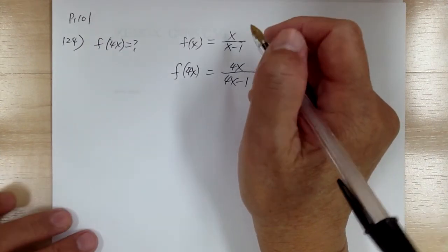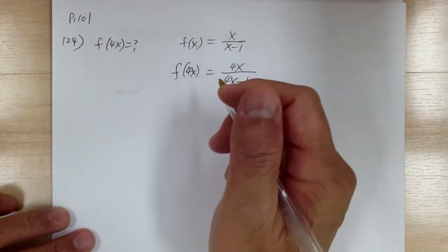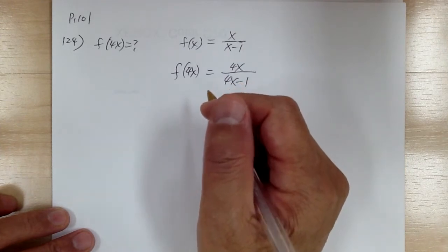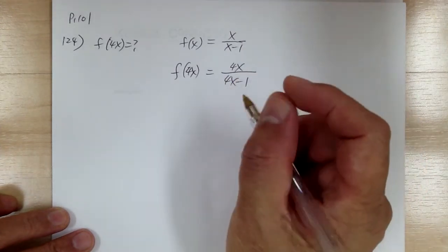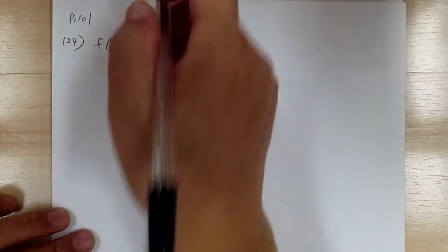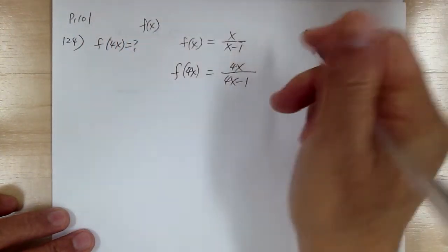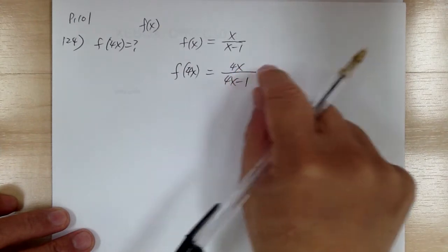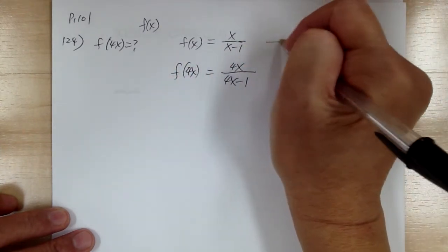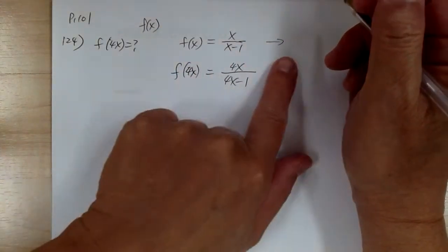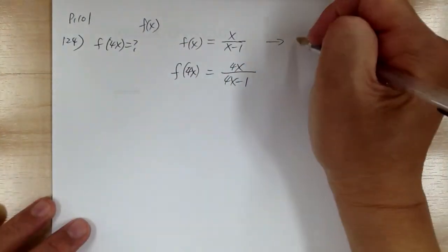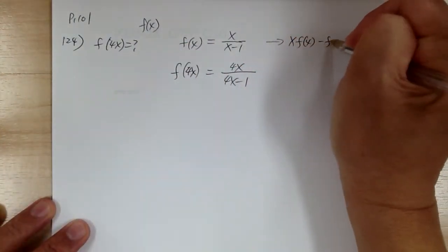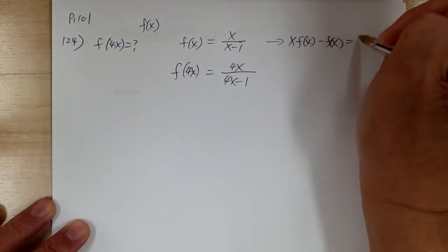Next, since we want this in terms of f of x, we need to solve for x so we can substitute. So from here, go to the side and cross multiply. You're going to get x times f of x minus f of x equal to x.